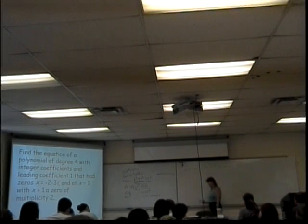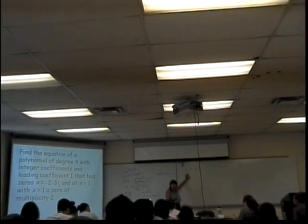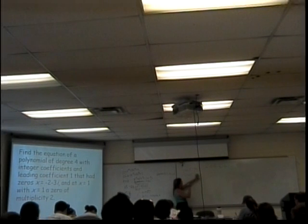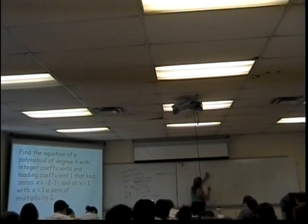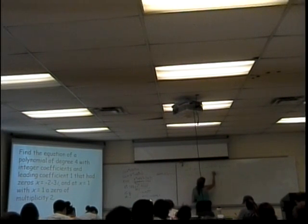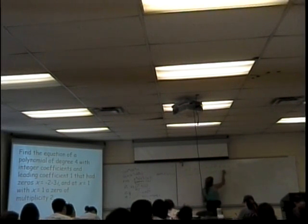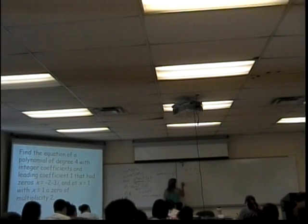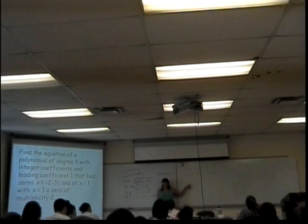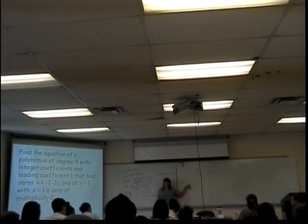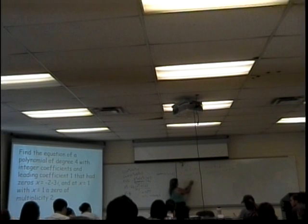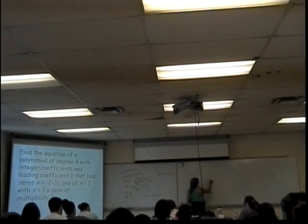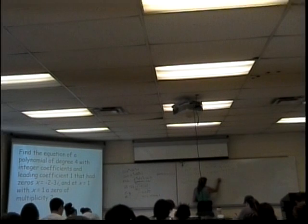Now we can make our parentheses, or we can work our way there. x minus 1 equals 0, and x minus 1 equals 0, and x plus 2 plus 3i equals 0, and x plus 2 minus 3i equals 0. Now I put them together: f of x equals — here's where I usually put my leading coefficient. What is my leading coefficient? 1, so I don't need to put anything. So I can start writing x minus 1 times x minus 1 times x plus 2 plus 3i times x plus 2 minus 3i.